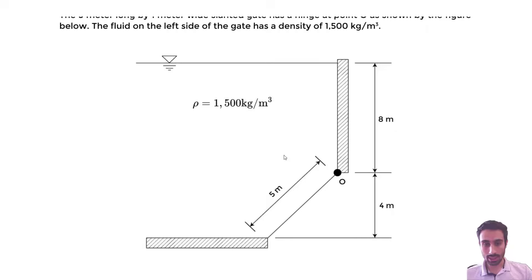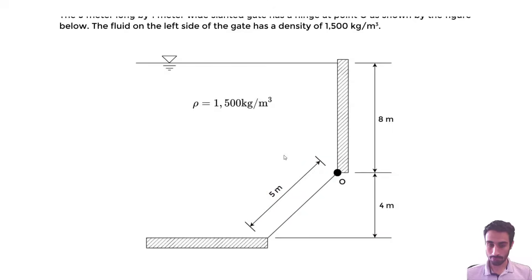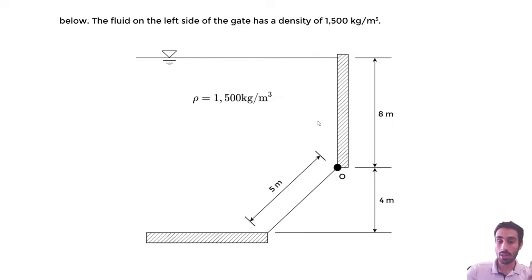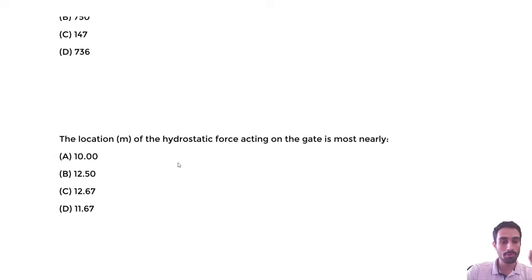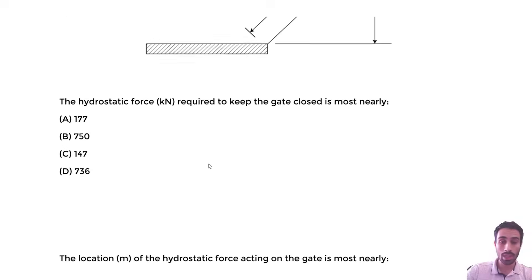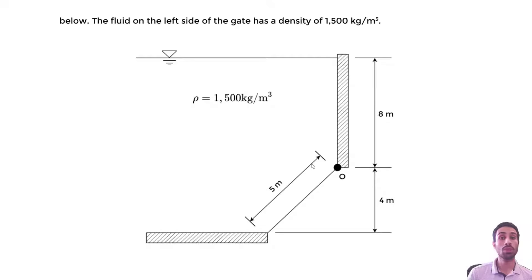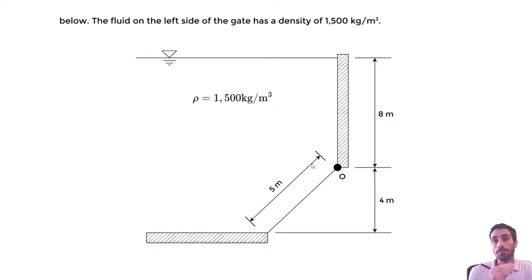The fluid on this side has this density and always distributes some pressure. We have a distribution of pressure, and what we want to find is the resultant force — relating that pressure to a force in kilonewtons, the hydrostatic force due to the fluid. We'll also find the location of this force for that slanted gate. The first thing to do is draw the pressure distribution, which is also provided in the FE handbook.